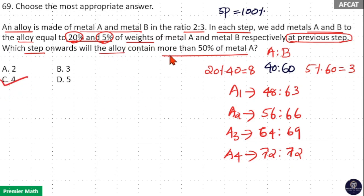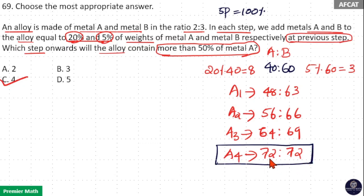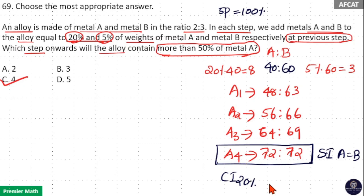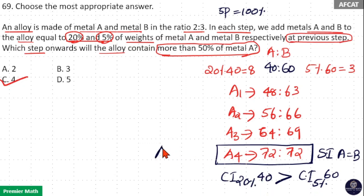In the fourth step the alloy contains more than 50% of metal A — that is option C. Here at simple interest, A equals B (72:72), meaning the alloy contains 50% A and 50% B. But the question asks about compound interest. At simple interest A equals B, so if we apply compound interest at 20% for principal 40, it is greater than compound interest at 5% for principal 60, because 20% is four times 5%.